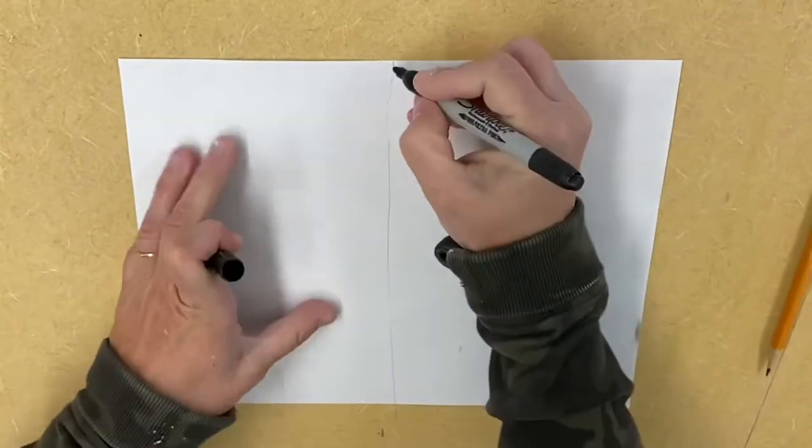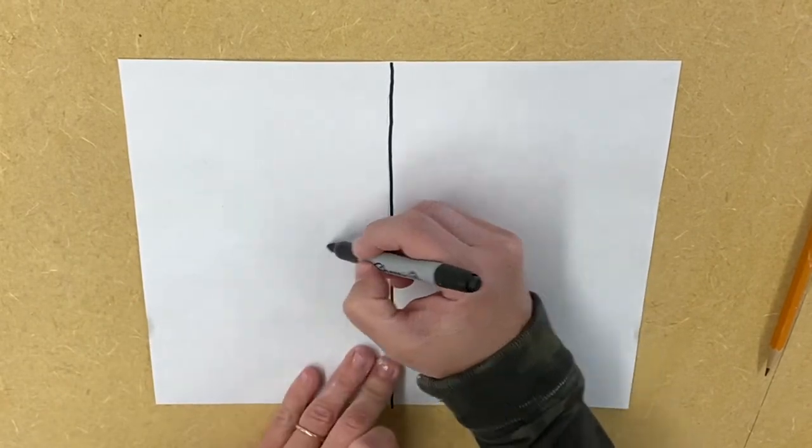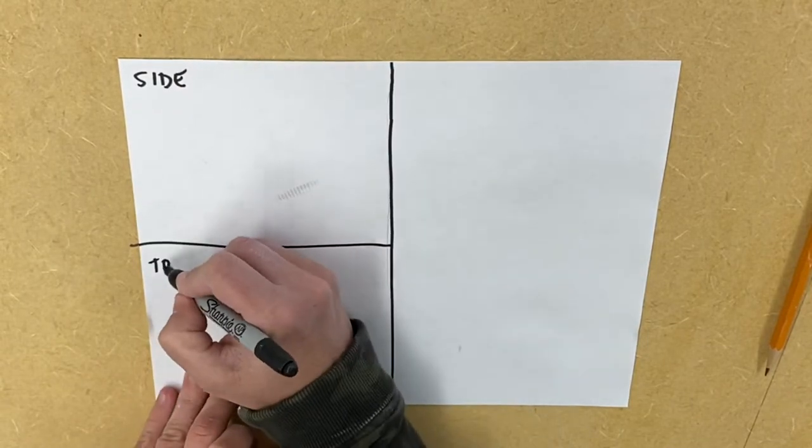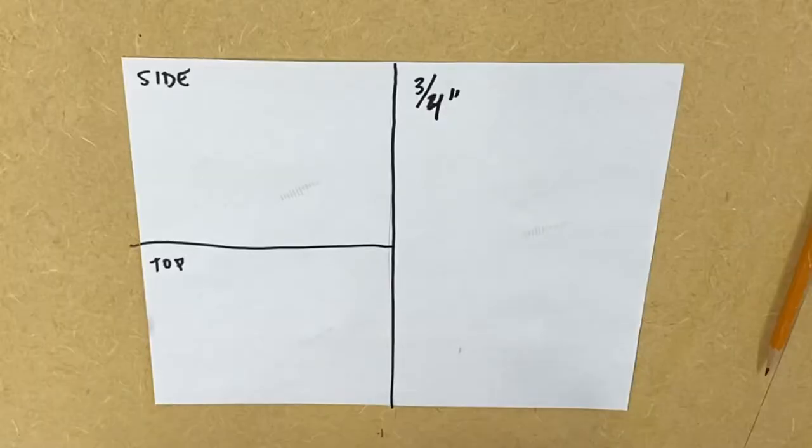First thing you're going to do - sharpie so it's easier to see - cut it in half. Now cut half of this in half. Done. This is going to become the side view, this is going to become the top view, and this is going to become the three-quarter view.